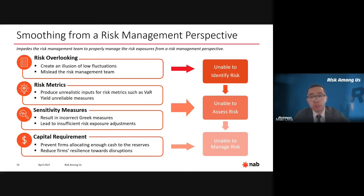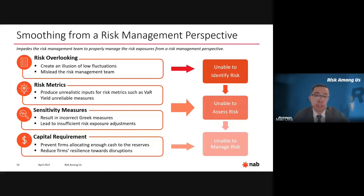In addition, smoothing would result in an unreliable sensitivity analysis, because the Greek risk measures calculated from false transactions are unlikely to be accurate, causing the perceived risk position of the currency portfolio to be inaccurate and potentially leading to insufficient risk exposure adjustment for hedging purposes. Lastly, smoothing leads to insufficient capital requirements for NAB's foreign exchange trading line of business, causing overall business capital allocation to be undesirable. Smoothing prevents NAB from allocating enough cash to reserves, putting the bank in a very risky position and reducing resilience towards potential disruptions.